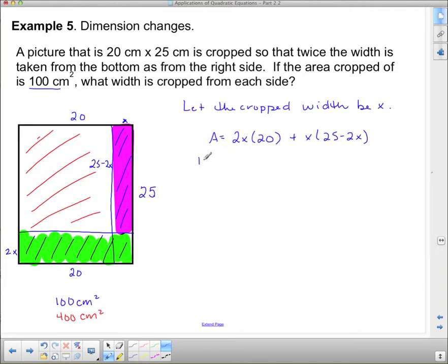So x times 25 minus 2x. And I know that this cropped off area is 100. I'm going to expand this side and I get 40x plus 25x minus 2x squared. Rearranging and getting one side equal to 0, I'm going to put that negative 2x squared out front, and I have plus 65x in the middle. And then I need to subtract that 100 on both sides. I can get rid of that negative. I never like the a value to be negative because it's harder to factor. So I'm going to change the sign on all of these things, which is effectively multiplying through by negative 1 on both sides.